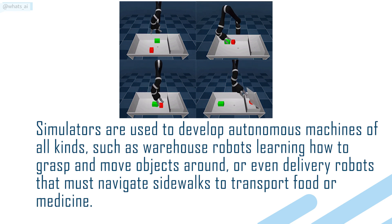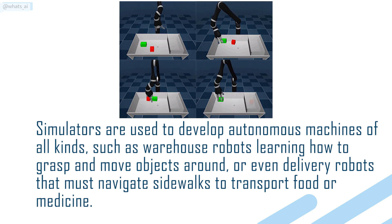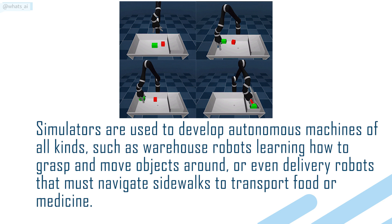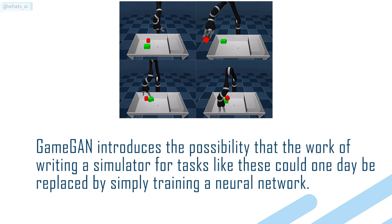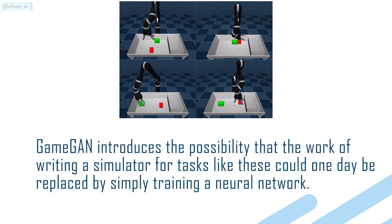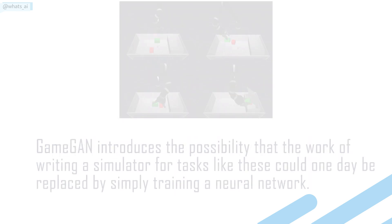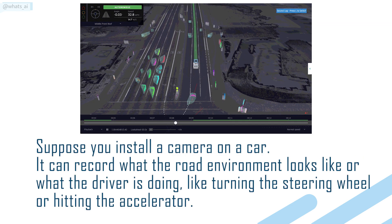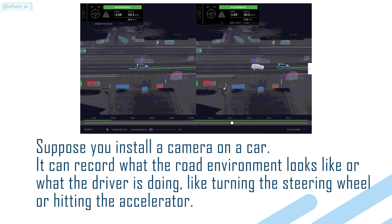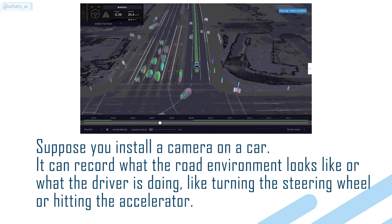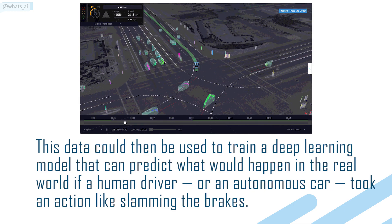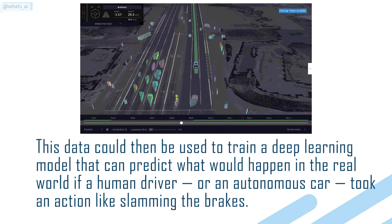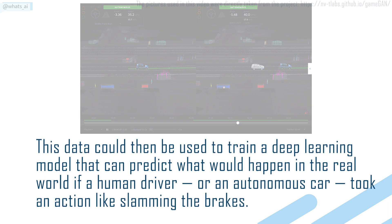Game developers could use this capability to experiment with new character ideas or game themes. Simulators are used to develop autonomous machines of all kinds, such as warehouse robots learning how to grasp and move objects, or delivery robots that must navigate sidewalks to transport food or medicine. GameGAN introduces the possibility that writing a simulator for tasks like these could one day be replaced by simply training a neural network. For example, a camera installed on a car can record what the environment looks like and what the driver is doing — like turning the steering wheel or hitting the accelerator — and this data could train a deep learning model to predict what will happen if a driver or autonomous car took an action like slamming the brakes.